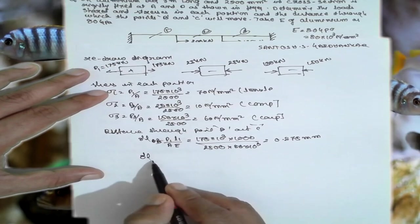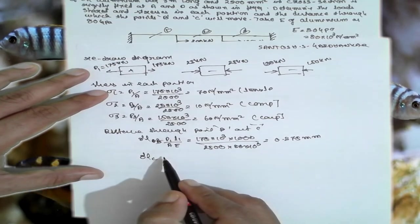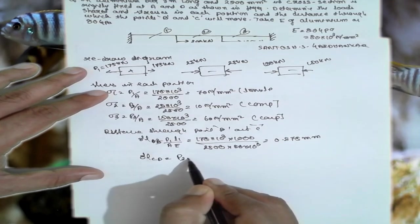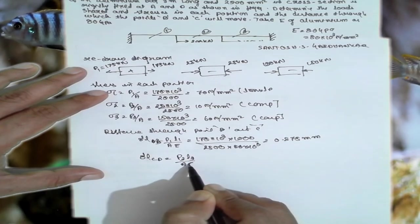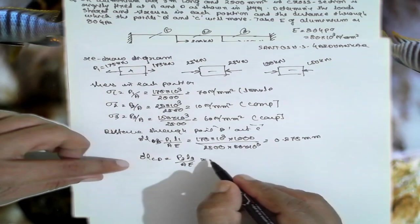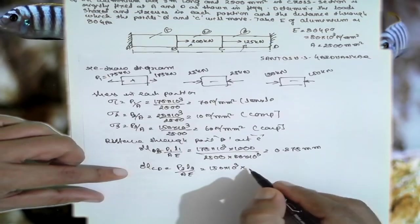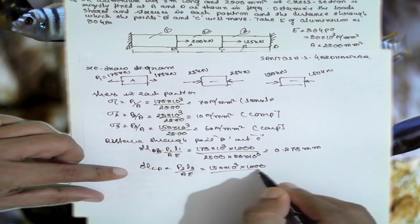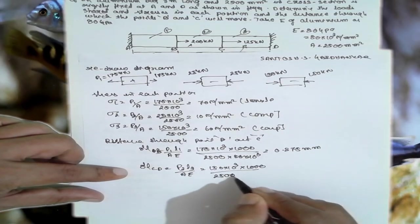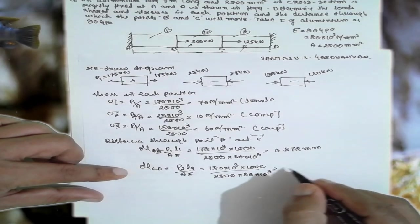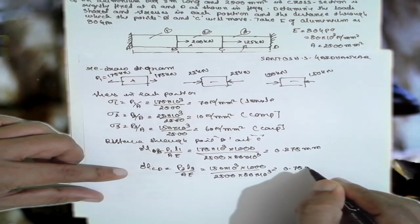Now for delta CD, P3×L3/(A×E). What is P3? 150×10³. L is nothing but 1000, divided by area 2500×80×10³. You will get the answer 0.75 mm.